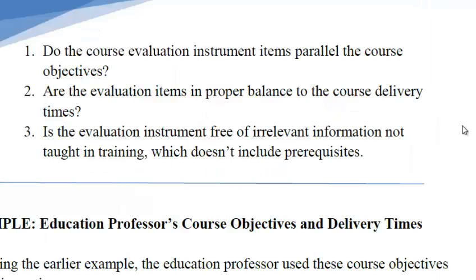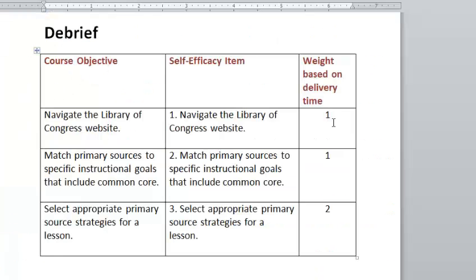The second criteria asks if each item is in proper balance to the course delivery times. Recall that the first two objectives — navigate and match — were 30 minutes each, whereas the third was 60 minutes. So in order to weight the self-efficacy instrument appropriately, we would have to give double the amount of weight to the third objective in order to support the instrument in terms of content validity based on that second criteria.